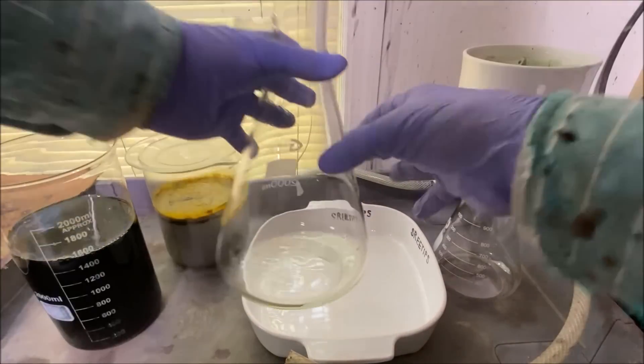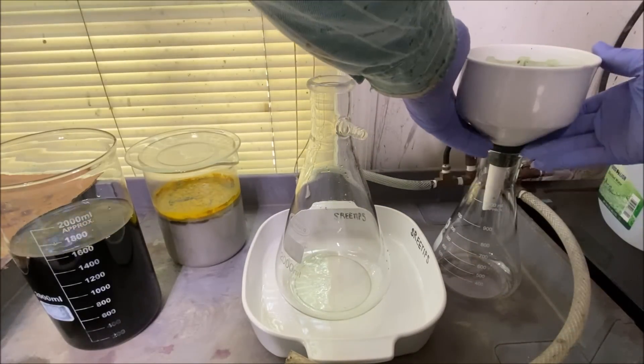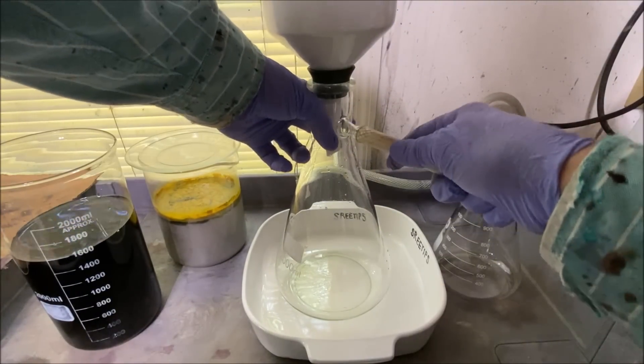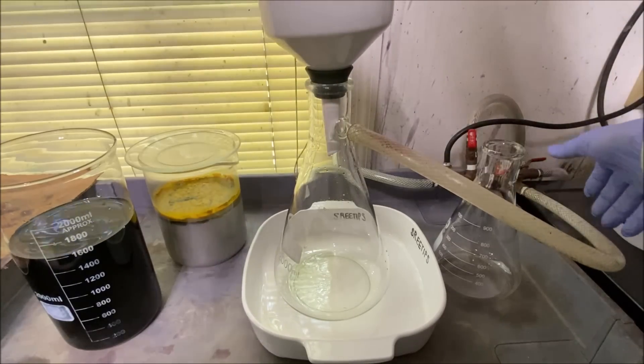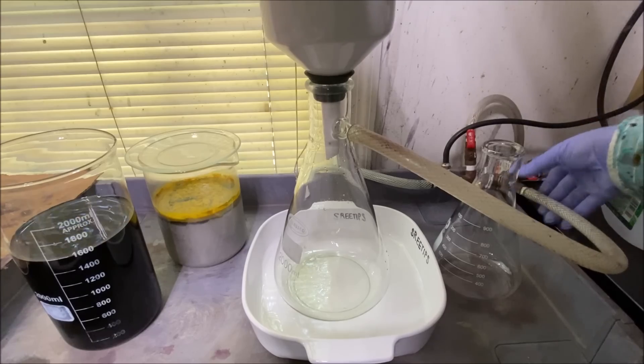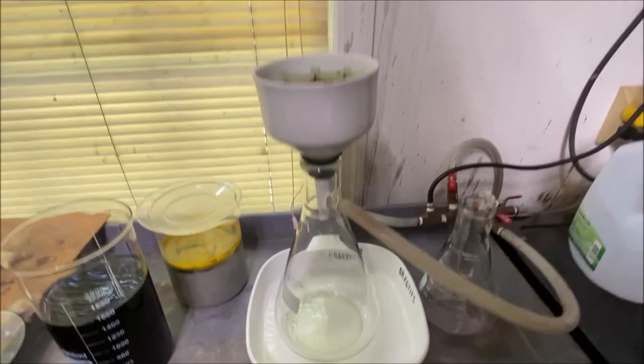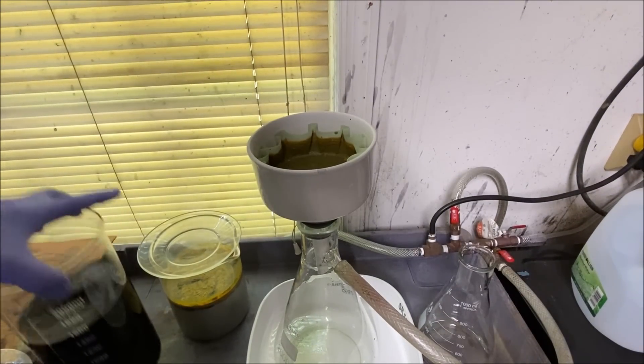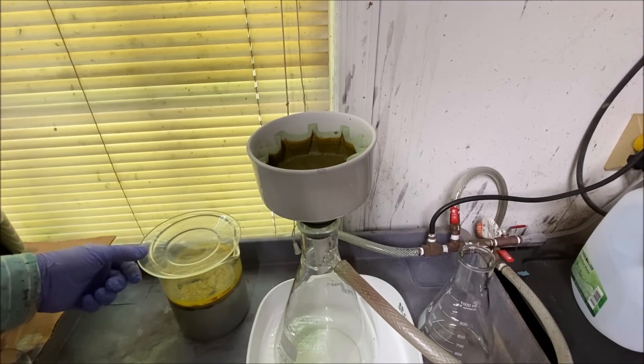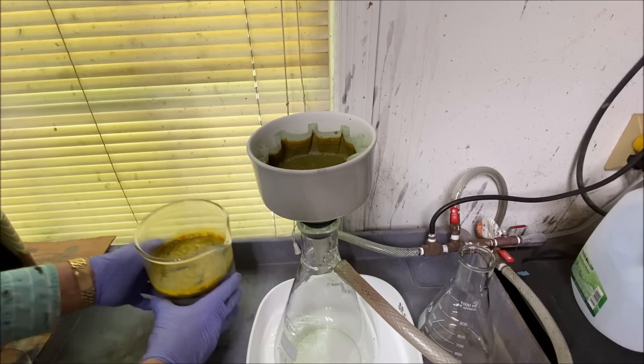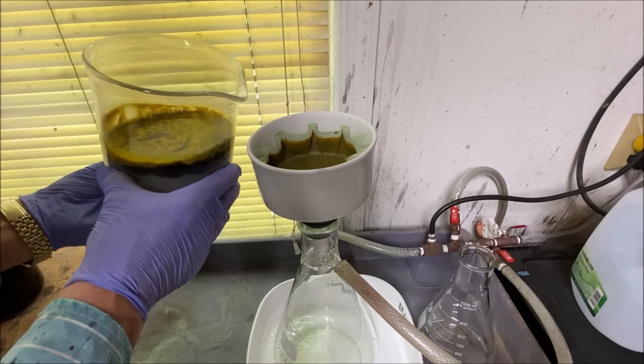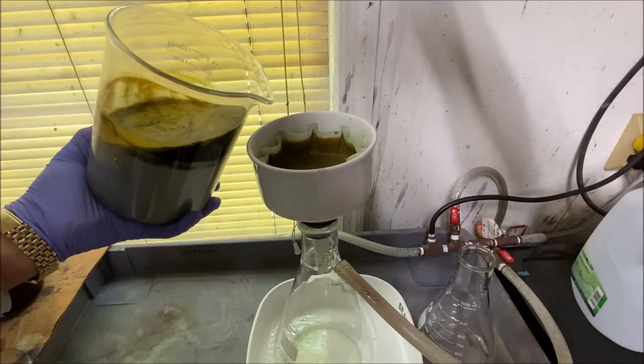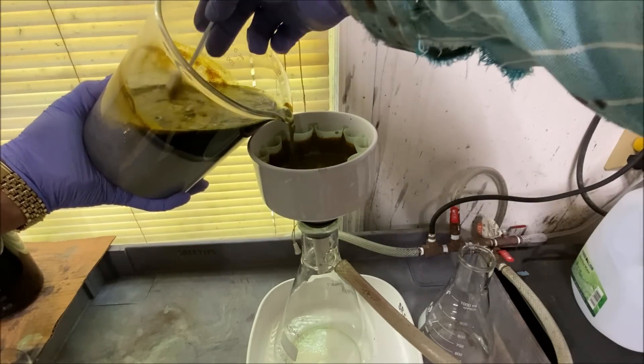Now we'll put the filter back in the funnel, turn the vacuum on. Now we'll continue filtering this solution. Try to capture it in this filter. This is our dmg precipitate from the second beaker.